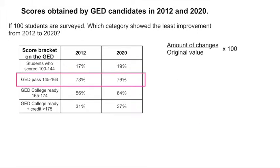If we look at the second category, we do the same thing. The amount of change would be 76 minus 73 divided by 73, and multiply that by 100. Here our result would be 17.64%.